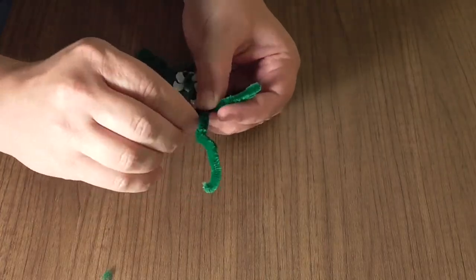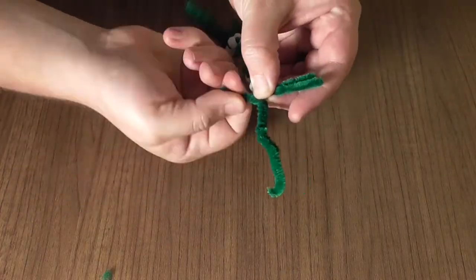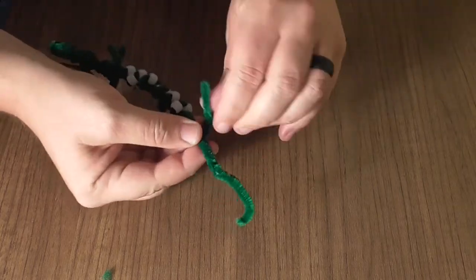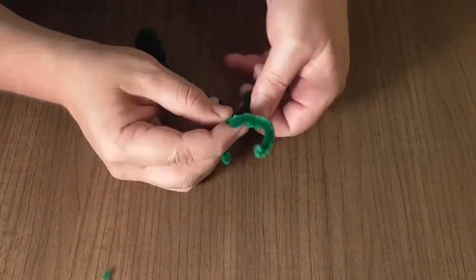Use the other quarter pipe cleaners to create two more legs on the back end of the chameleon at the base of its tail, at the back of its torso.